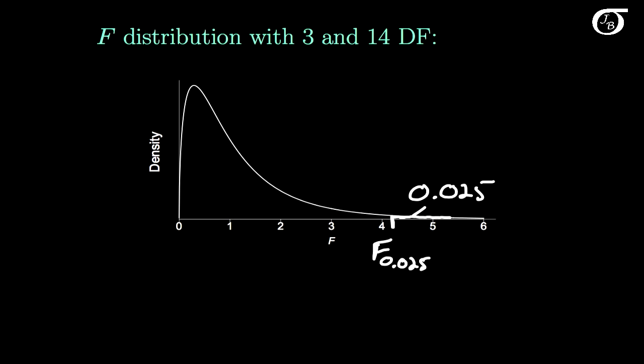But the R commands are based on the cumulative distribution function. So we're going to have to give it the area to the left here to get this value. And we know this area to the left has to be 1 minus 0.025, or 0.975.